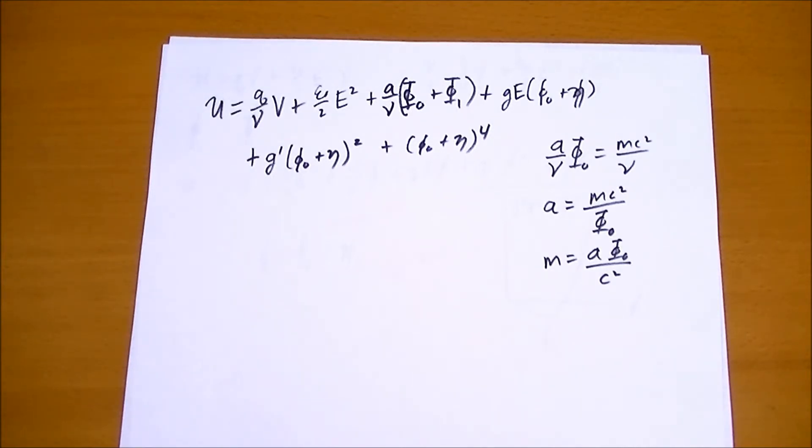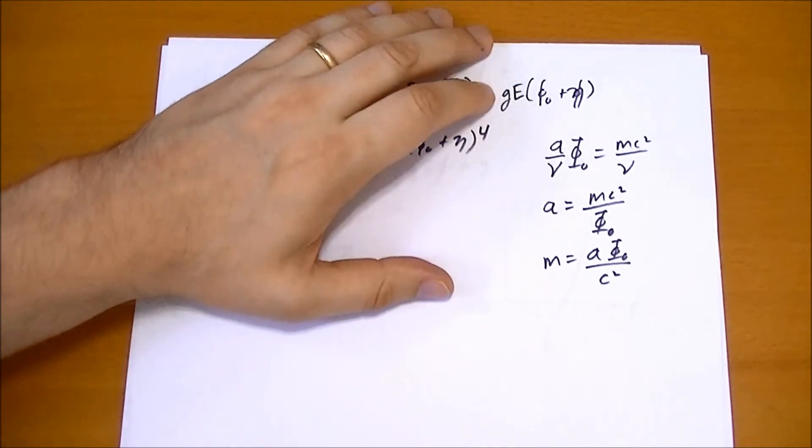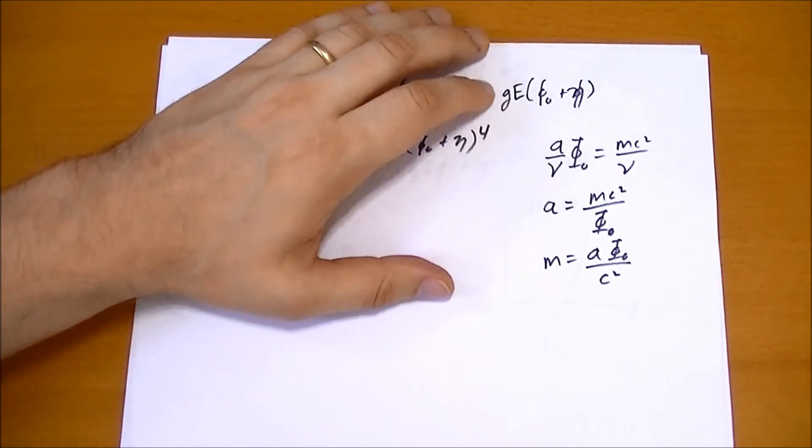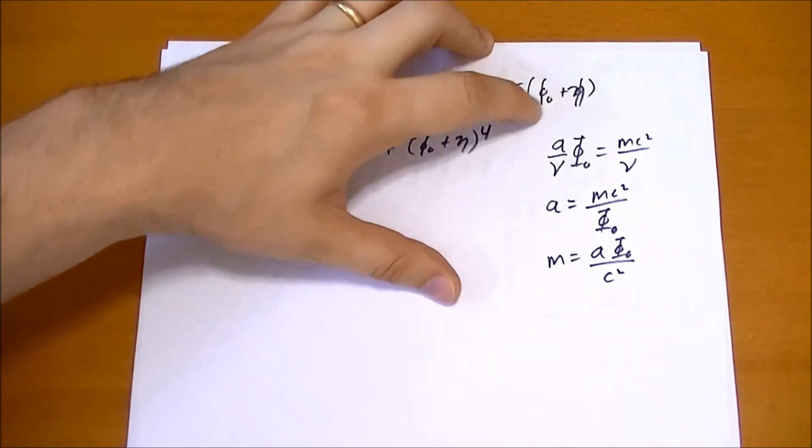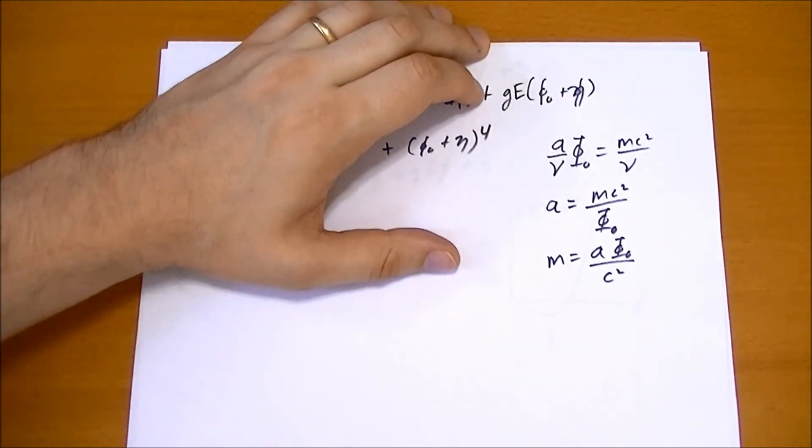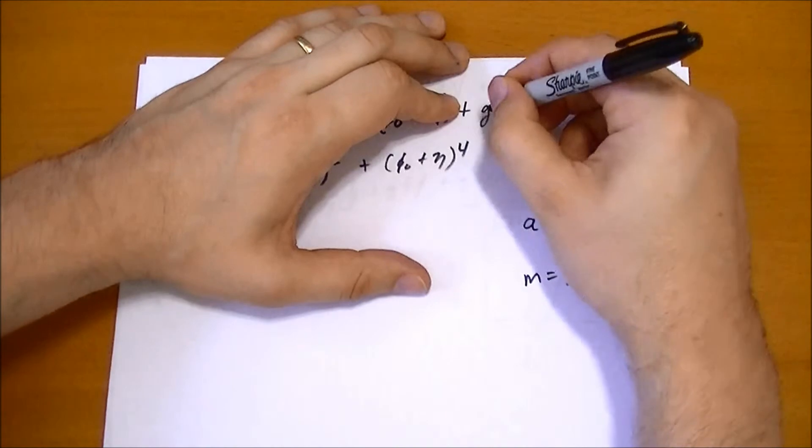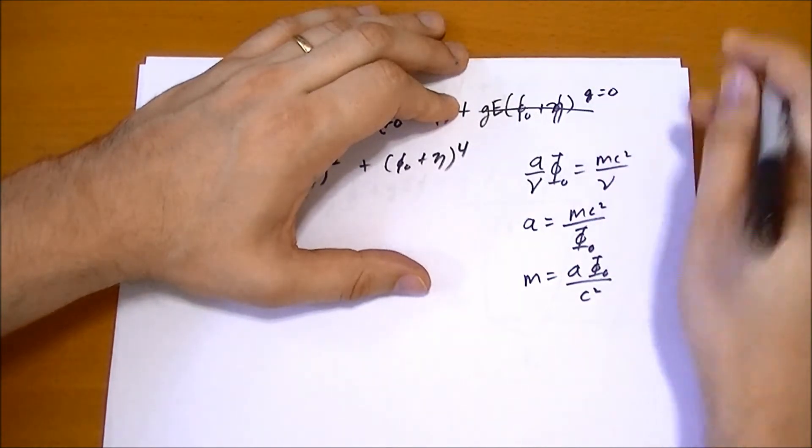Now the interesting thing is if you look at this one, if you just have an electric field and nothing else, you're at the vacuum, so you just have an electric field. Then this term would basically say the electric field behaves like it has mass, right? Since we know that's not the case, we just set g equals to zero. So that term falls off the face of the earth.